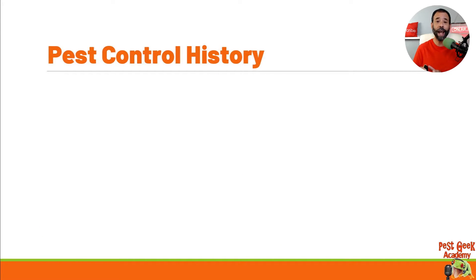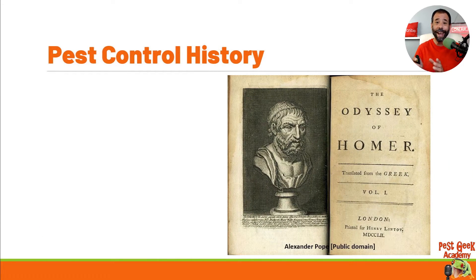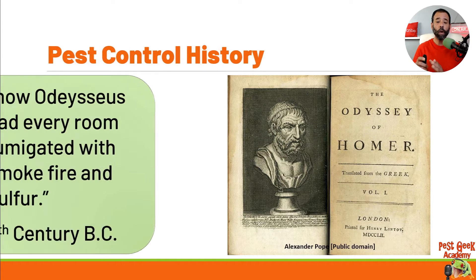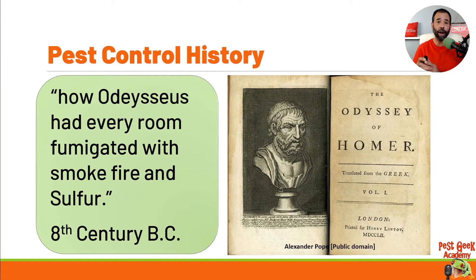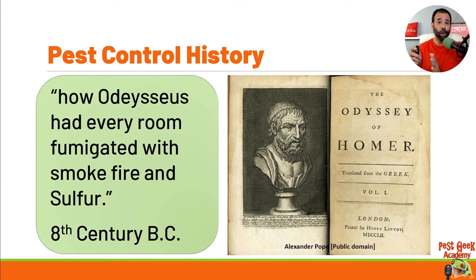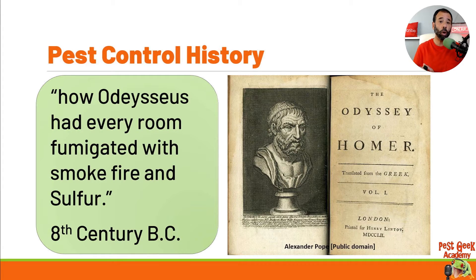Going all the way to the 8th century BC, Homer writes in the Odyssey how Odysseus had every room fumigated with smoke, fire, and sulfur. We know from more recent pest control history that sulfur is still used in farming, agriculture, and in pesticides.